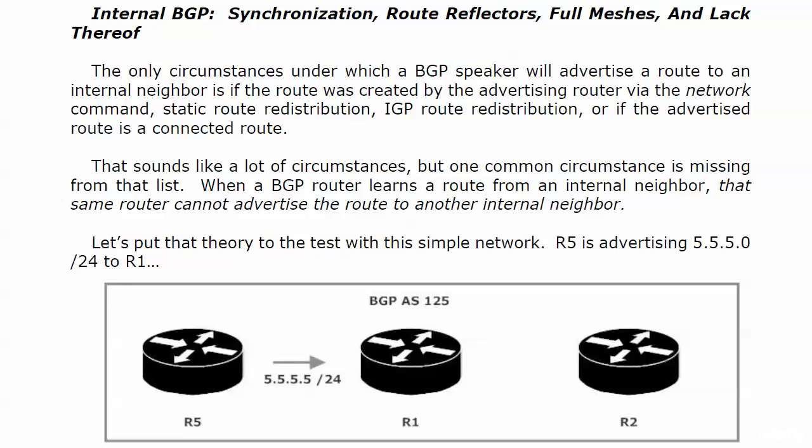Now you look at that list and you say sounds like a pretty comprehensive list to me, but there's one very common circumstance missing from that list. When a BGP router learns about a route from one internal neighbor, that same router cannot advertise the route to another internal neighbor. And that's a pretty common circumstance.